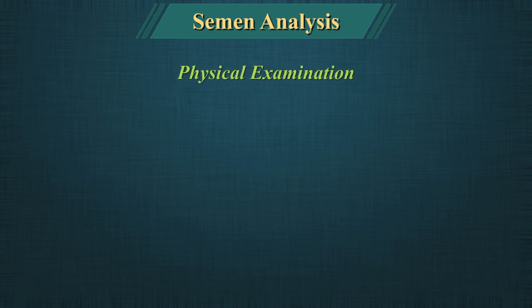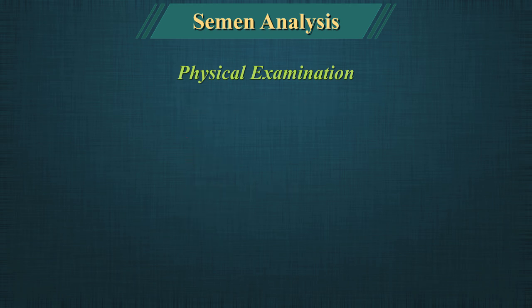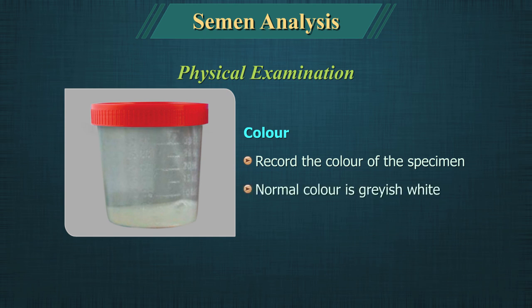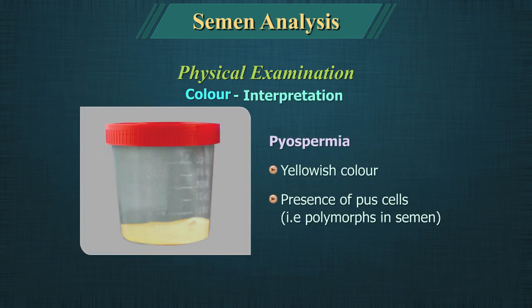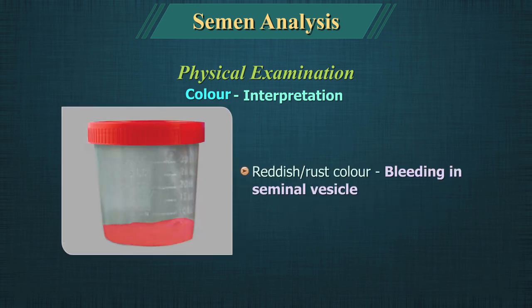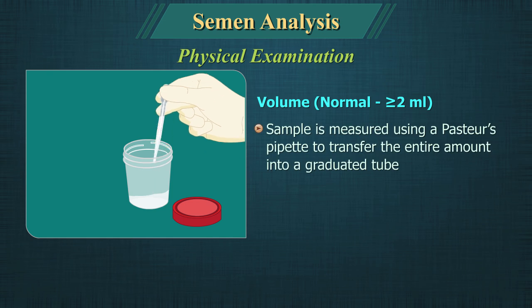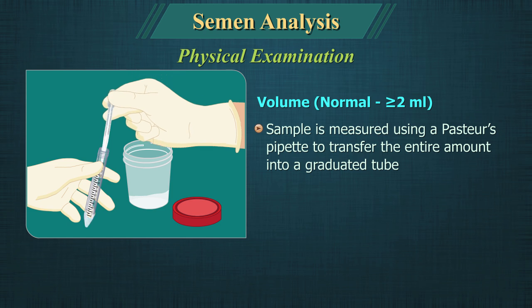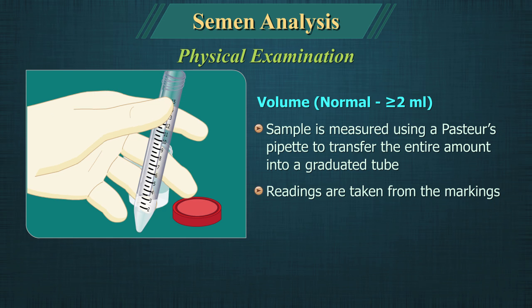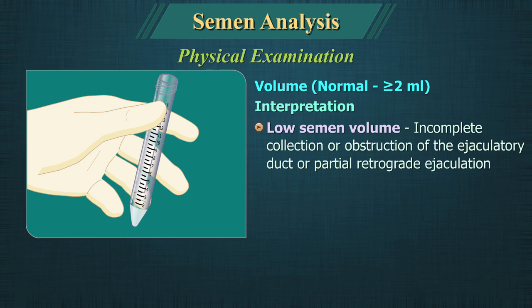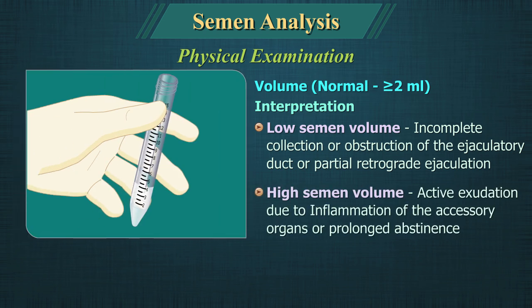Physical examination of semen includes color, volume, liquefaction time and viscosity. Color: Record the color of the specimen. Normal color is grayish white. A yellowish color may indicate pyospermia, and a reddish or rust color may indicate bleeding in the seminal vesicle. Volume: Semen volume is measured using a Pasteur's pipette to transfer the entire amount into a graduated tube. Low semen volume may suggest incomplete collection, obstruction of ejaculatory ducts or partial retrograde ejaculation. High volumes may be associated with active exudation due to inflammation of accessory organs or prolonged abstinence.